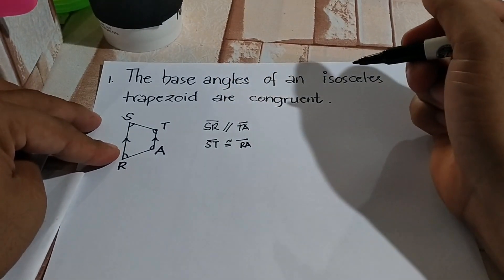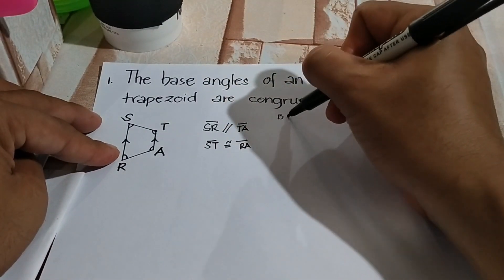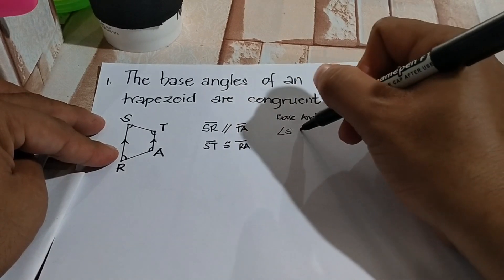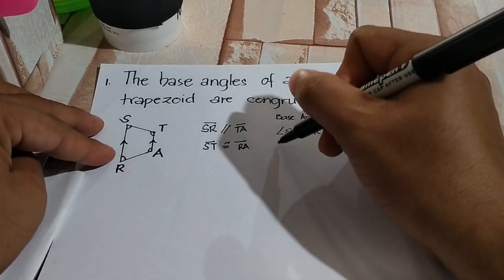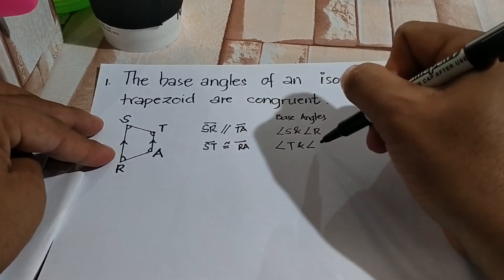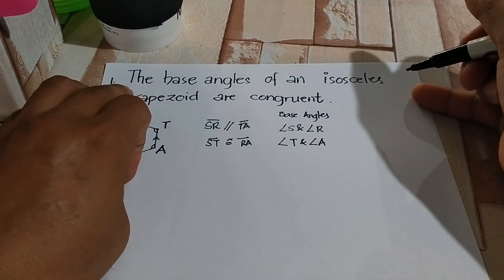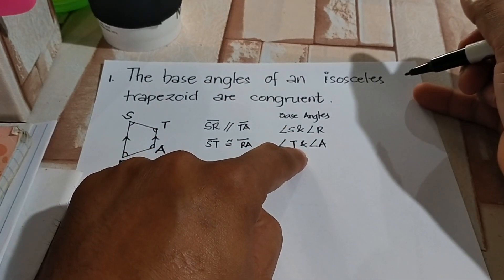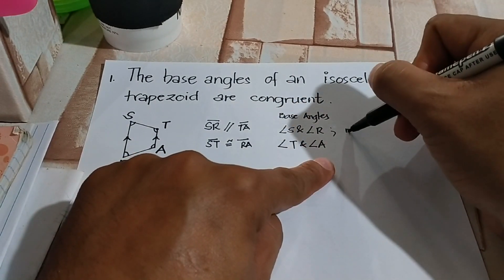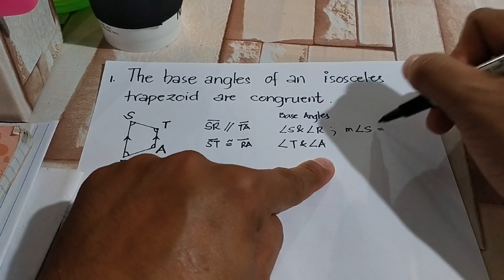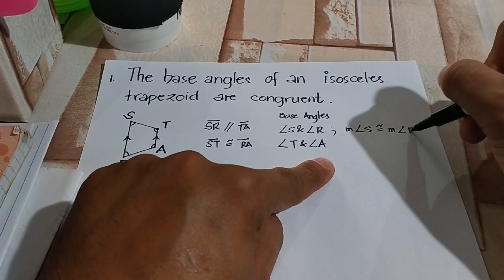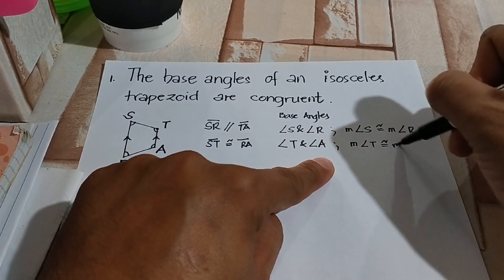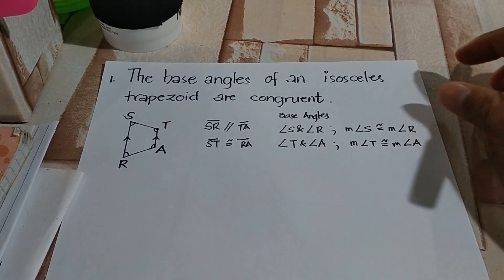So what are the base angles here? We have angle S and angle R as one pair of base angles, and angle T and angle A as another. From this theorem, the measure of angle S is congruent to the measure of angle R, and the measure of angle T is congruent to the measure of angle A.